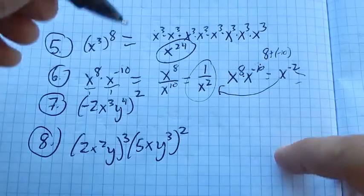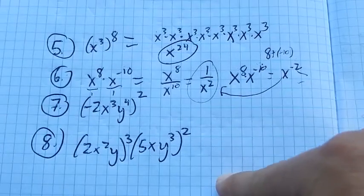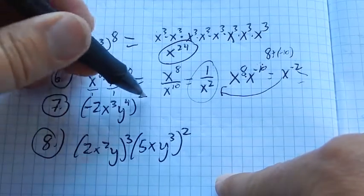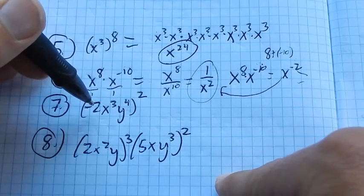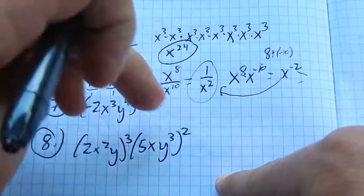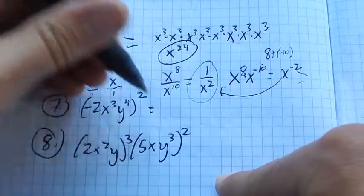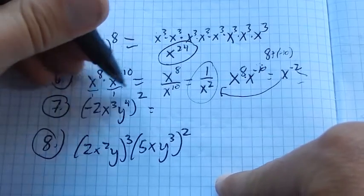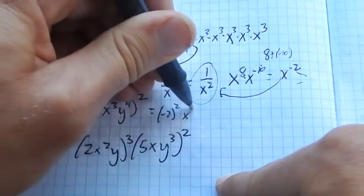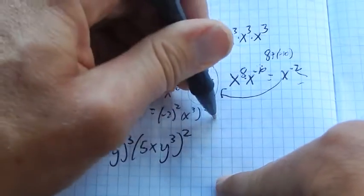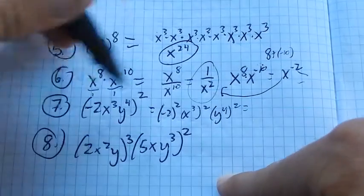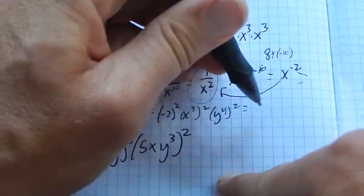Number 7. This whole thing is squared. And these are all multiplied together. So I know that the square is going to distribute across that multiplication. Another way to think about this is it's just this times itself. You could write it out and then just multiply the pieces together. I'm going to think of it as negative 2 squared multiplied by x cubed squared, multiplied by y to the fourth squared. Just squared each piece in there.